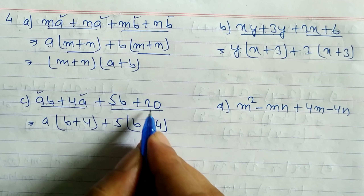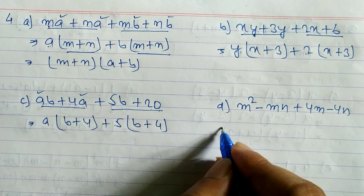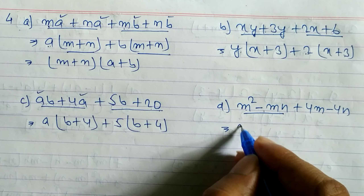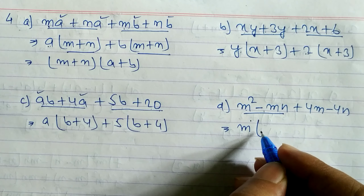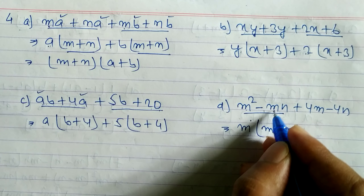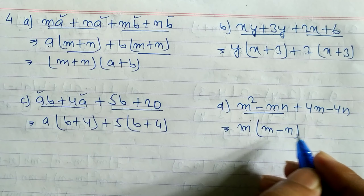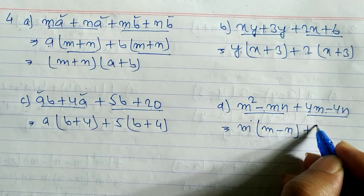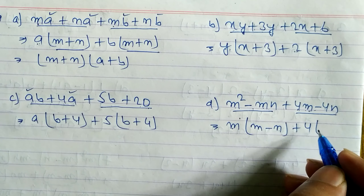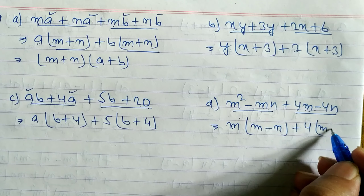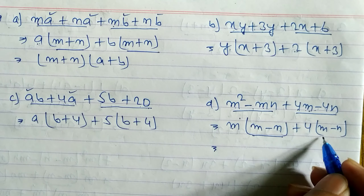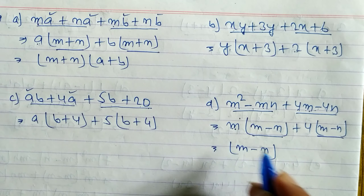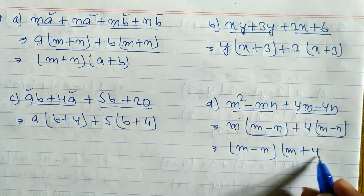Now look at question 4d. From m² minus mn, m is common, remaining m minus n. From 4m minus 4n, 4 is common, remaining m minus n. Now m minus n appears in both terms, so we take m minus n as common. Remaining here is m, so we write m plus 4. The answer is (m minus n)(m plus 4).